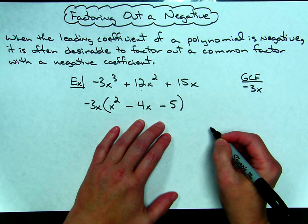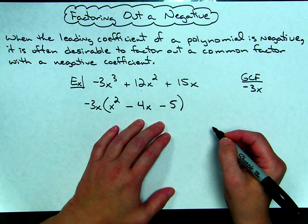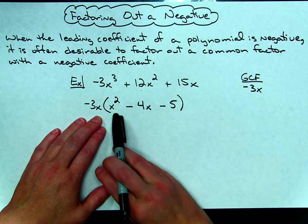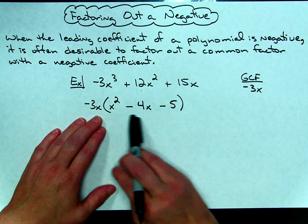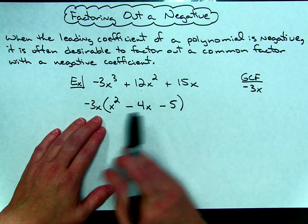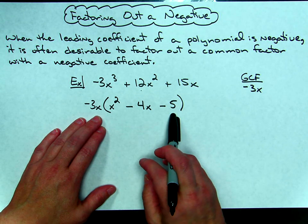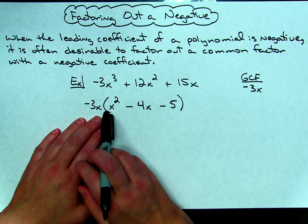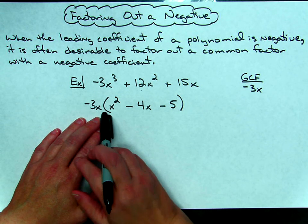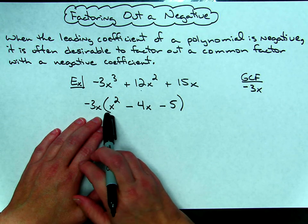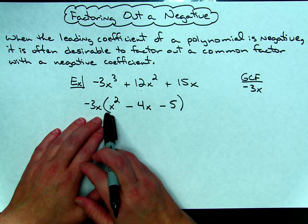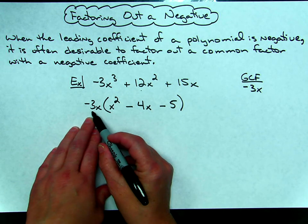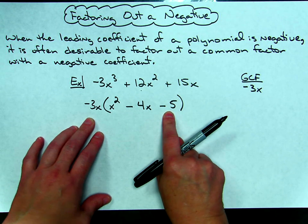Directions almost always say factor completely, so now I have taken out the greatest common factor, but I can't necessarily stop. I need to check this inside here and see if it's something that can be factored further. It turns out to be a nice little trinomial, and in this case, yes, I can use guess and check and factor this. If I would not have taken the negative out, I would have had a negative leading coefficient right there, and then it would have been hard to factor this trinomial. So by taking that negative out, see, it's just a little trick, it helps you to factor this trinomial a little bit easier.